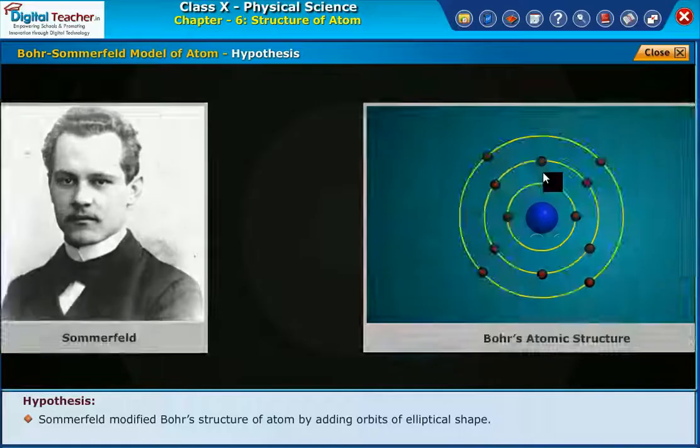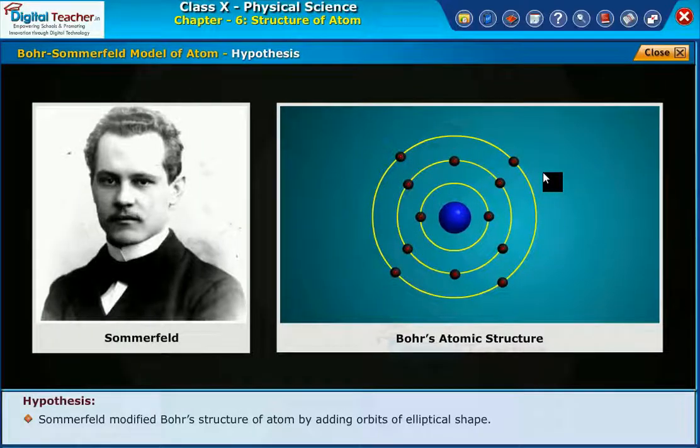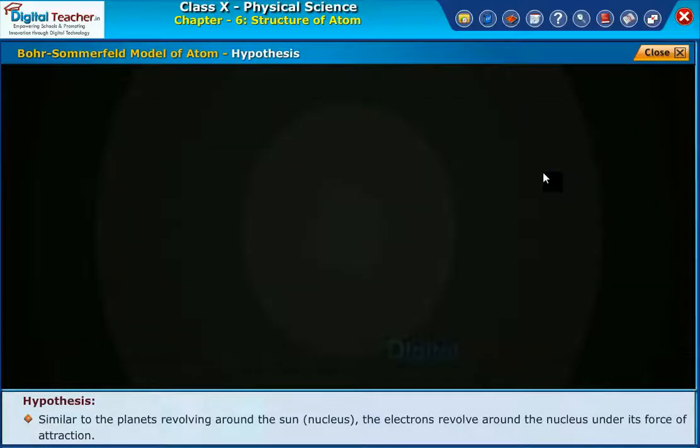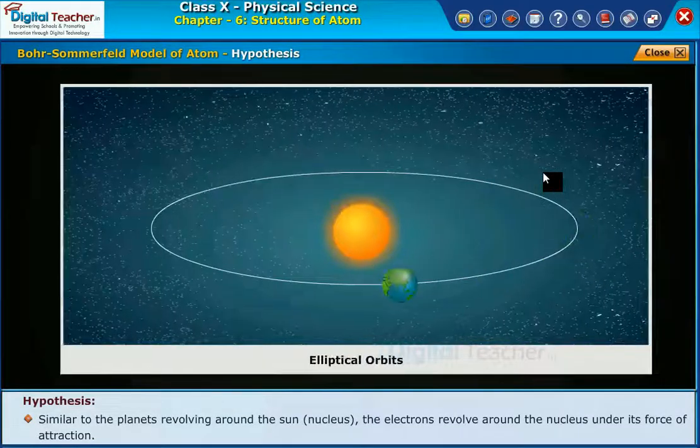Hypothesis: Sommerfeld modified Bohr's structure of atom by adding orbits of elliptical shape, similar to the planets revolving around the sun, that is, the nucleus.